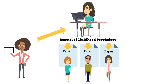The peer reviewers, who are also child psychology scholars, evaluate Professor Jordan's paper. Then the reviewers have three choices for the paper: reject, accept, or accept with revisions. Very few papers are accepted without revisions.